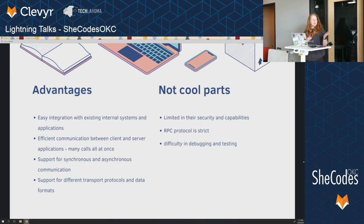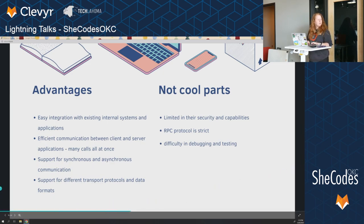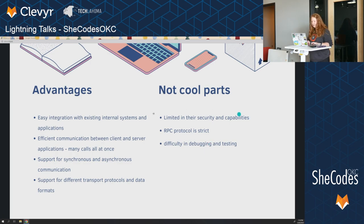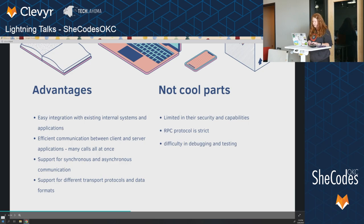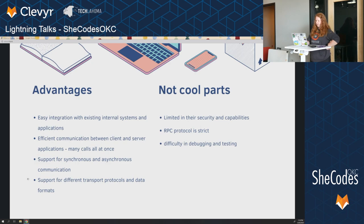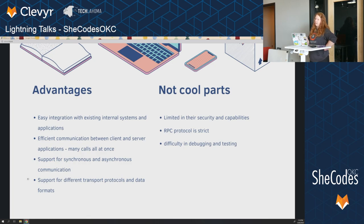RPC does support synchronous and asynchronous operations — it can call and wait, or just fire asynchronously. It can also support different transport protocols and formats, going over TCP and HTTP. Some advantages: it's easy to integrate with internal systems, provides efficient communication between client and server, and you can do a whole lot at once with it. The downsides: it's limited in security and capabilities, you're not transferring your data anywhere, and it's very strict and typed — you can only do exactly what it specifies. It's also difficult to debug and test because it will run and not give you any errors, so you don't know if your operation happened or not.